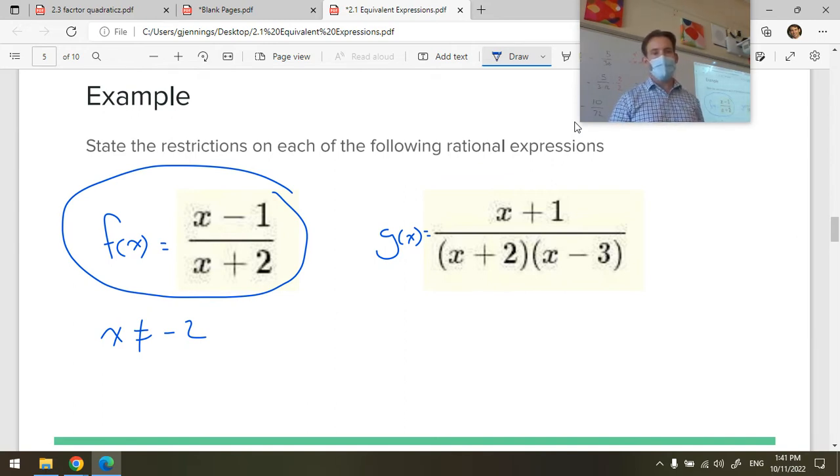How about for g of x? What is x not allowed to be? Well, we have the same x plus 2 factor on the bottom, so x can clearly not be minus 2. But what else can't x be? Positive 3. Positive 3 would also create a 0 factor on the bottom. Multiplying by 0 would create 0 on the bottom of that equation. That would not be allowed. So we have limitations on the domain. We're not allowed to use x as minus 2 and not allowed to use x as 3.